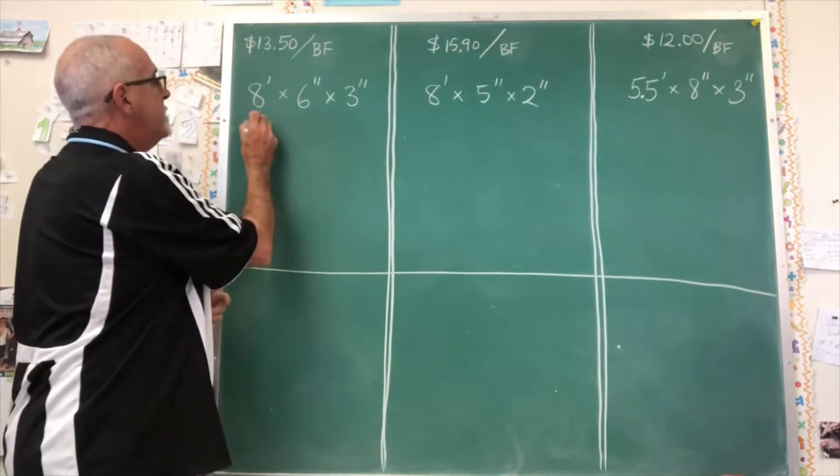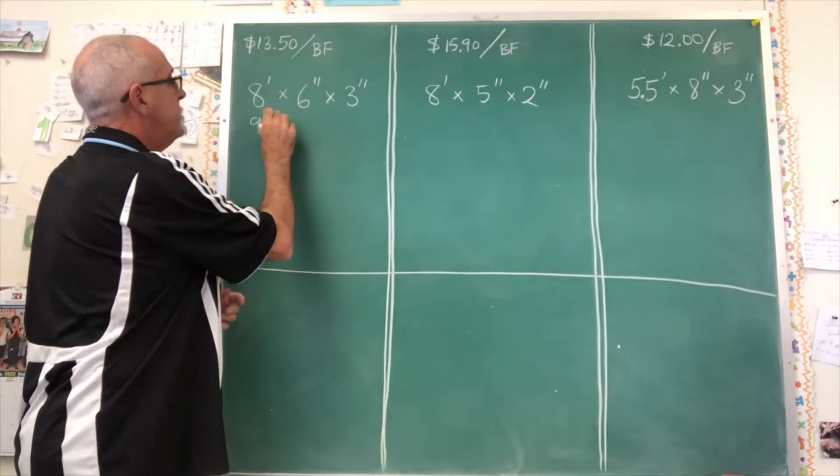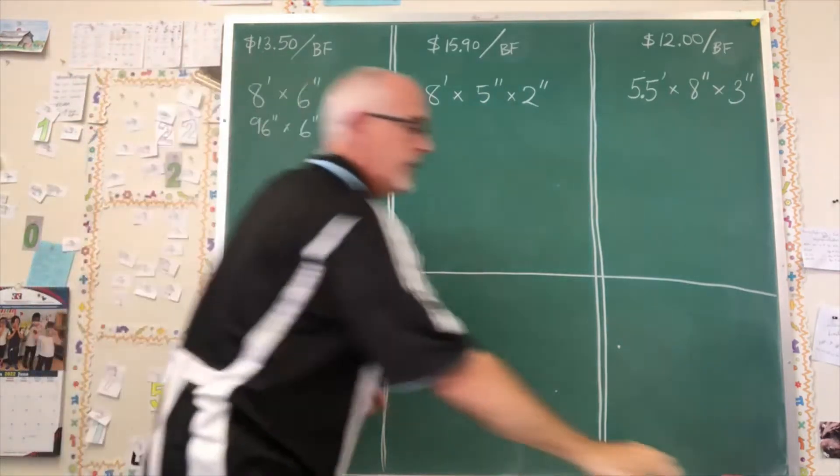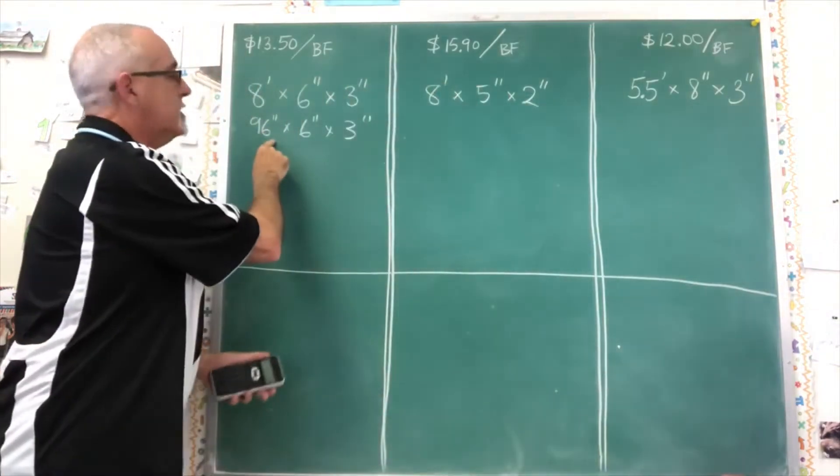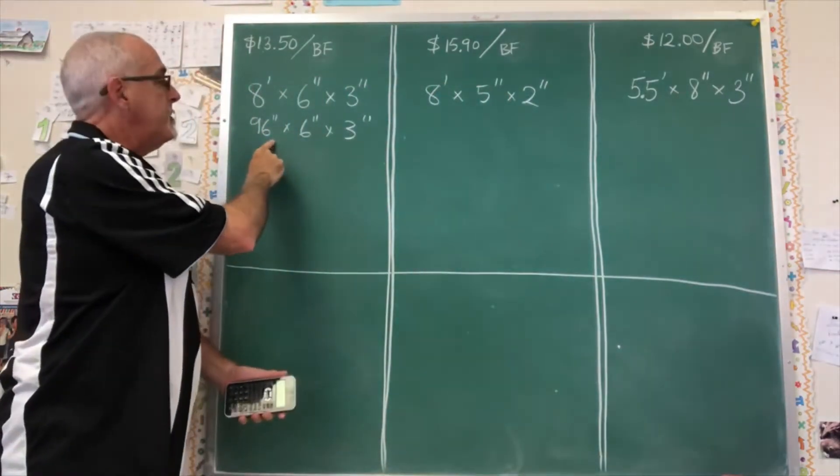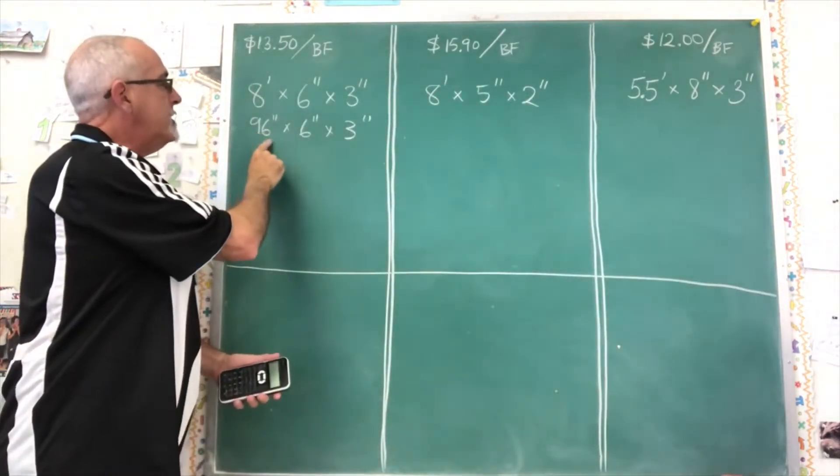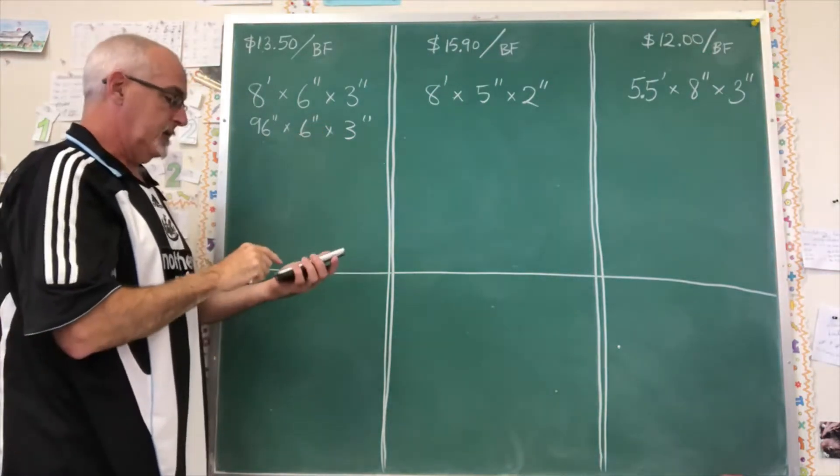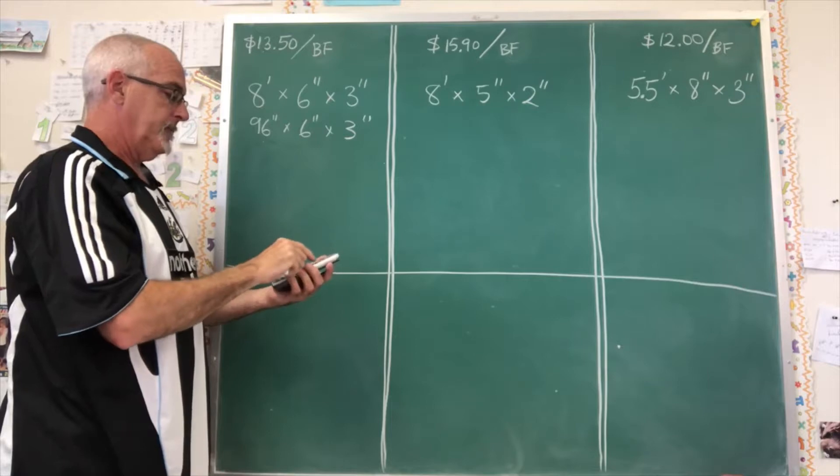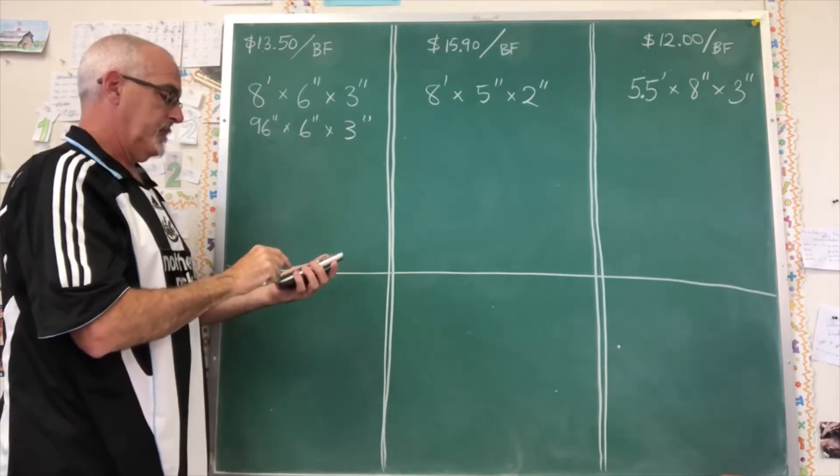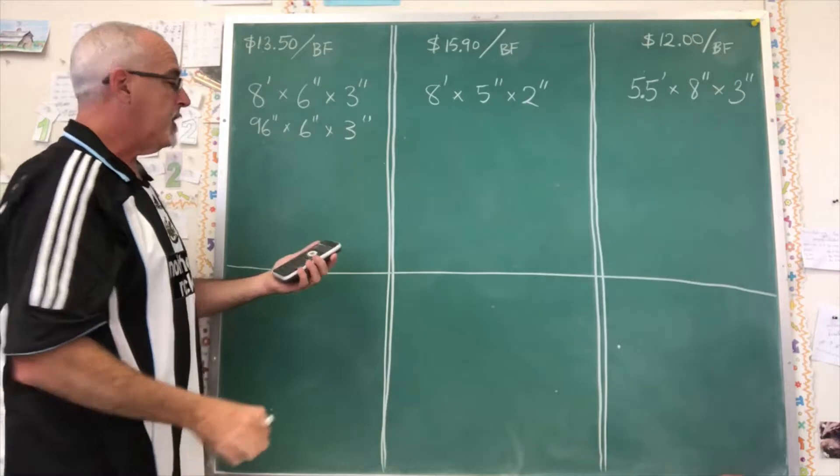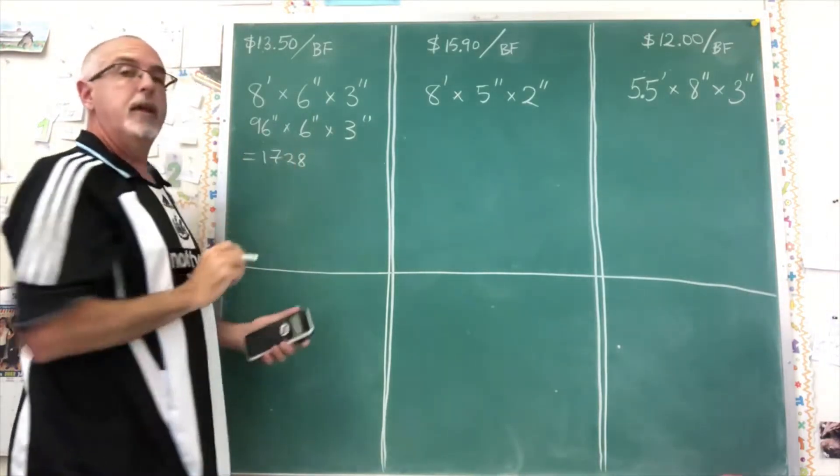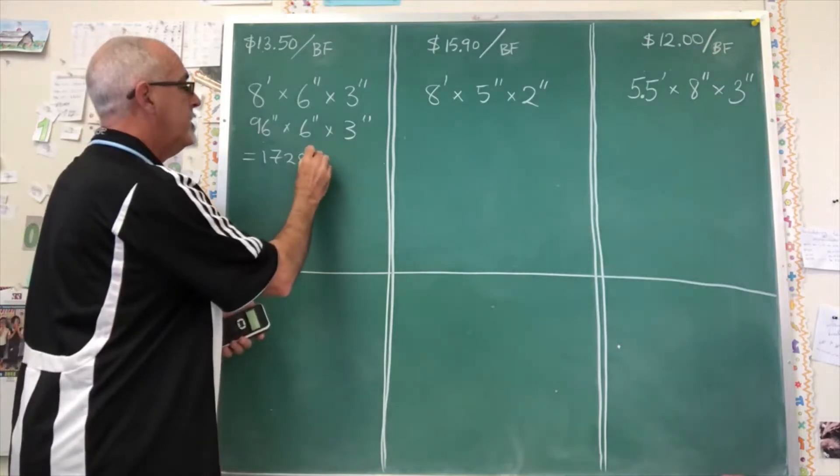8 feet is 96 inches and that's what's giving me the large number. I'm going to multiply my 96 inch length by my 6 inch width by my 3 inch thickness. And I'm getting 1728.